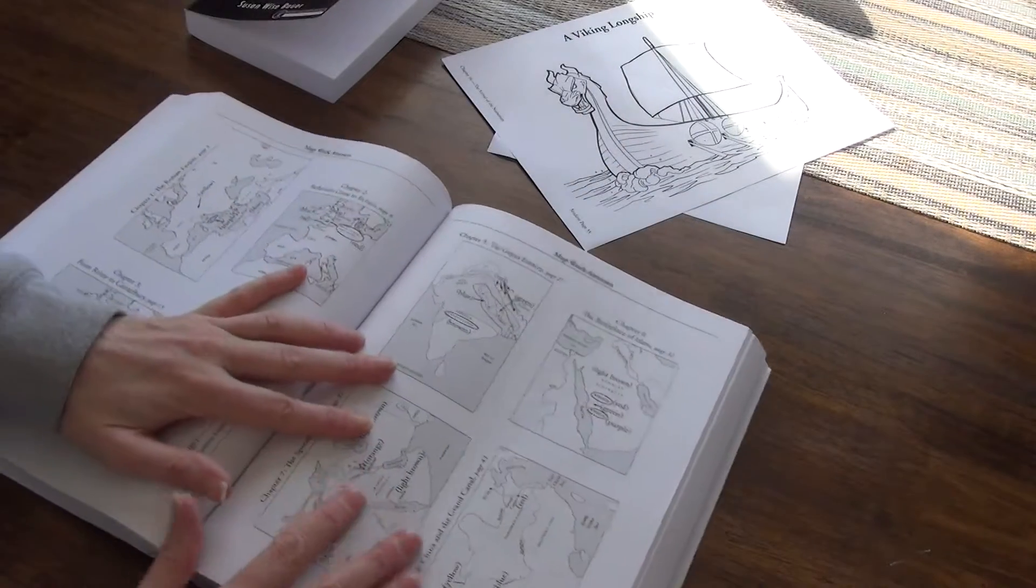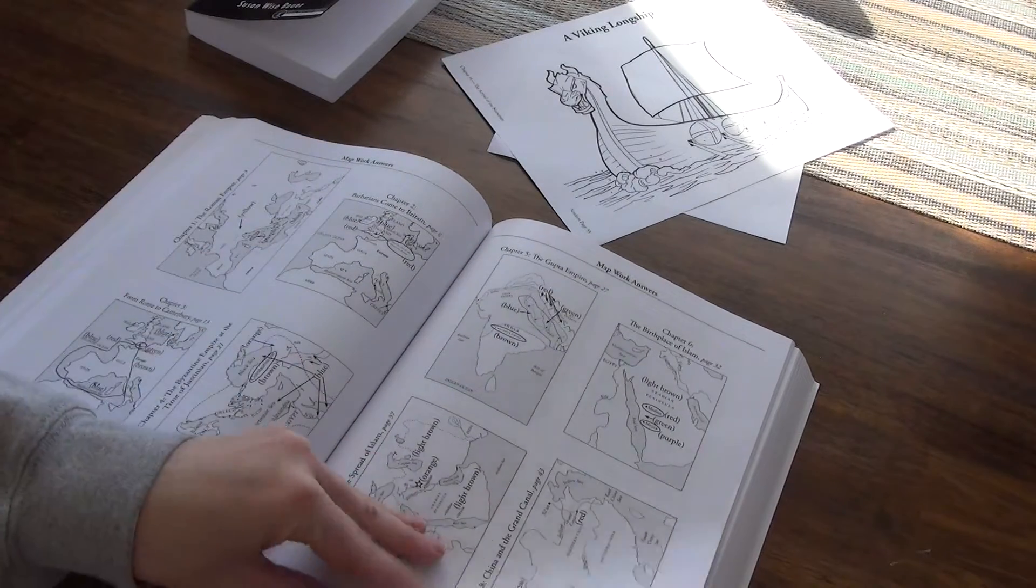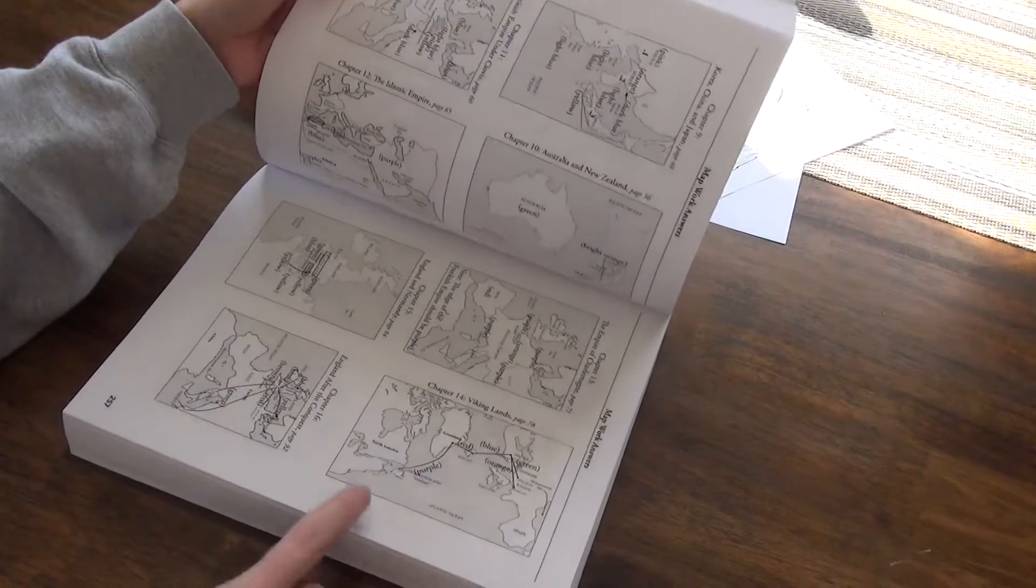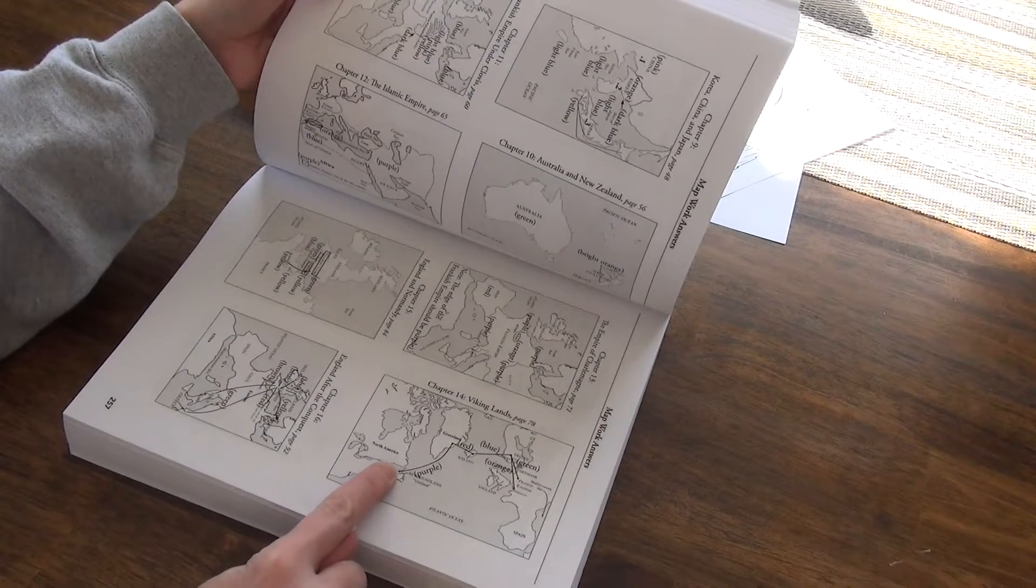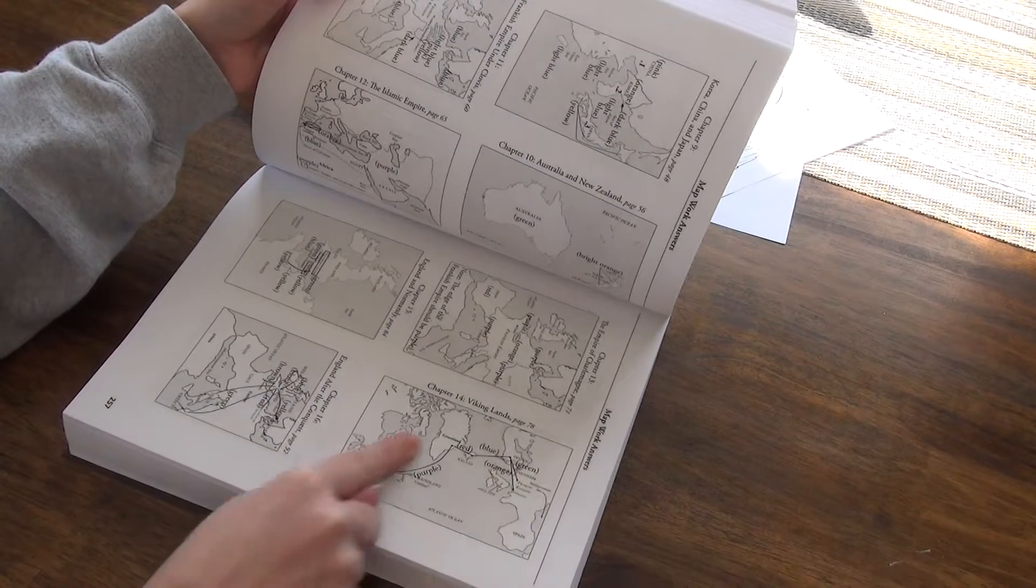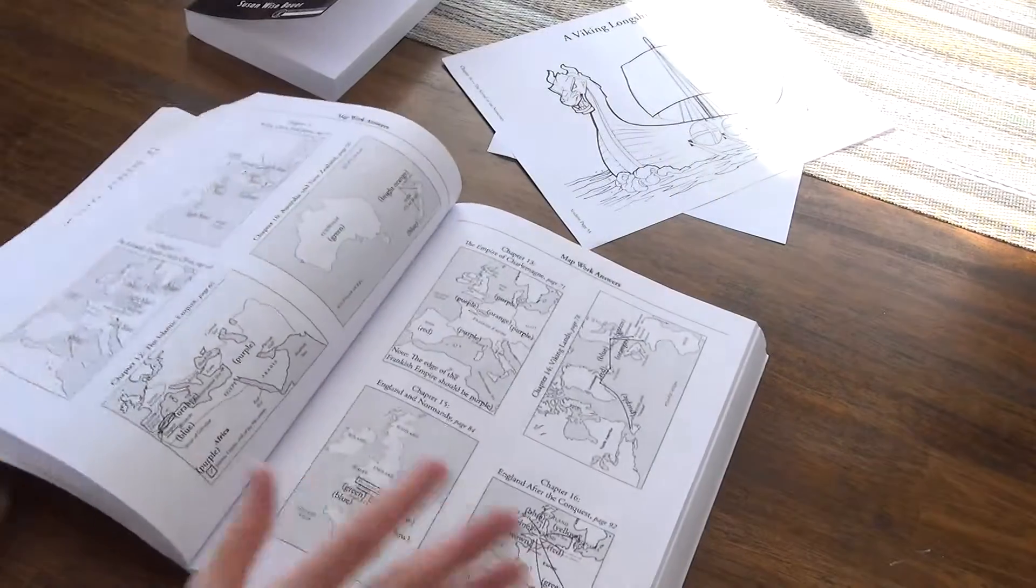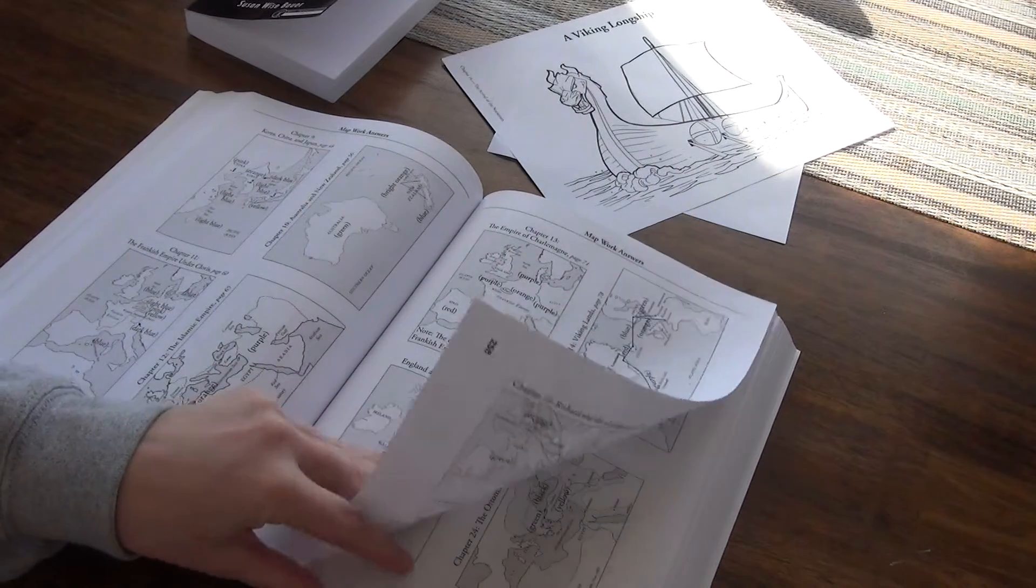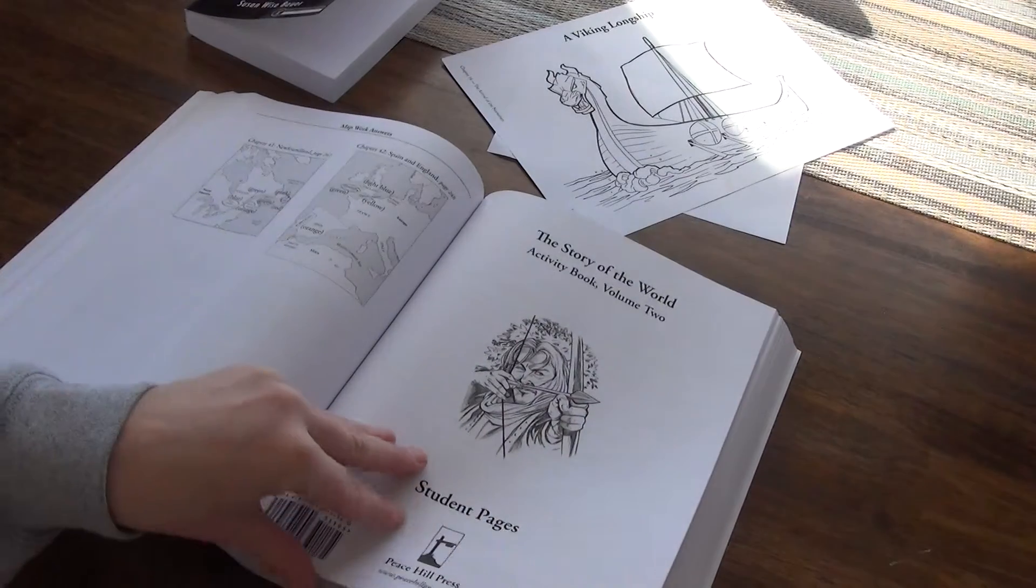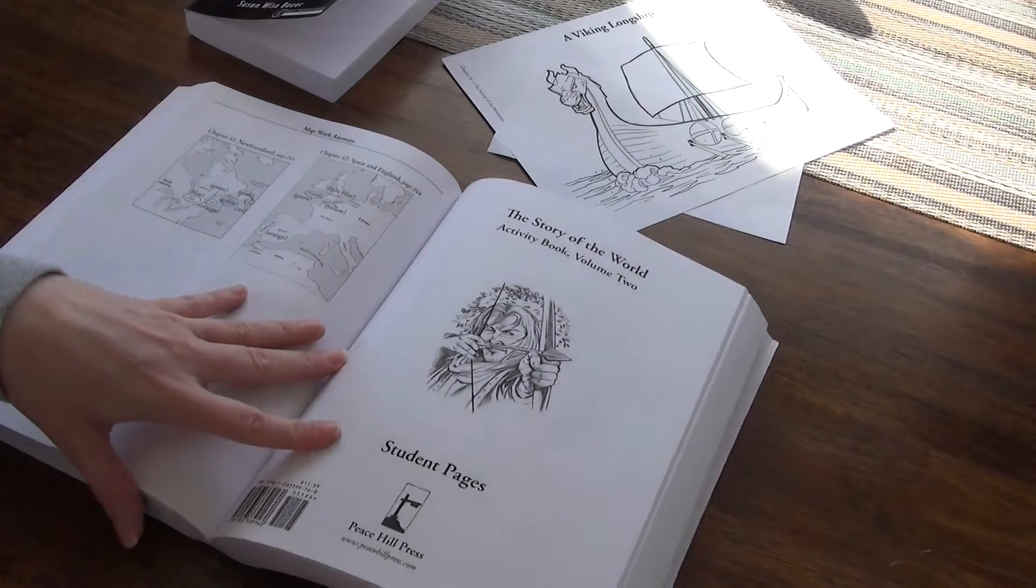Here is where we get to the map work answers. So every chapter has map work. So if we go to chapter 14 with the Viking longship, you can see where we should have done purple, red, blue, green, orange, and it tells us exactly how the maps should look like. This, depending on how old your student is, depends on how much you use some of these resources.